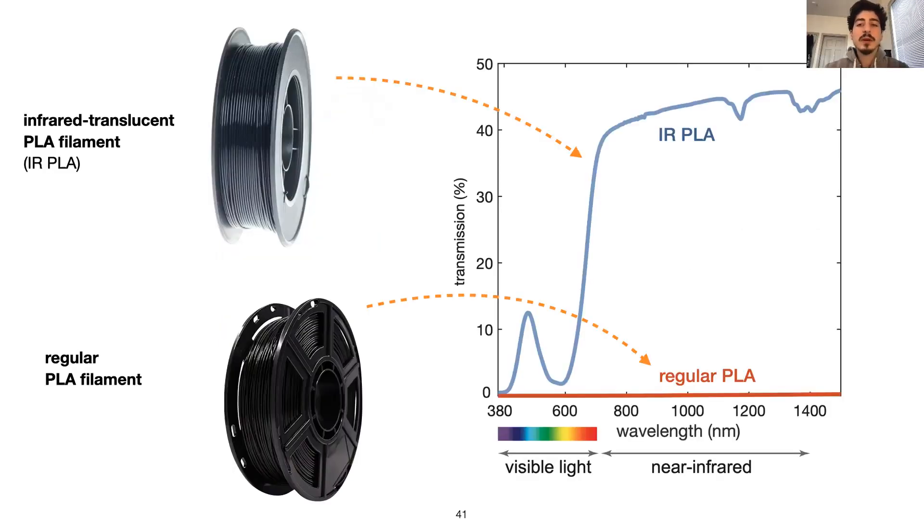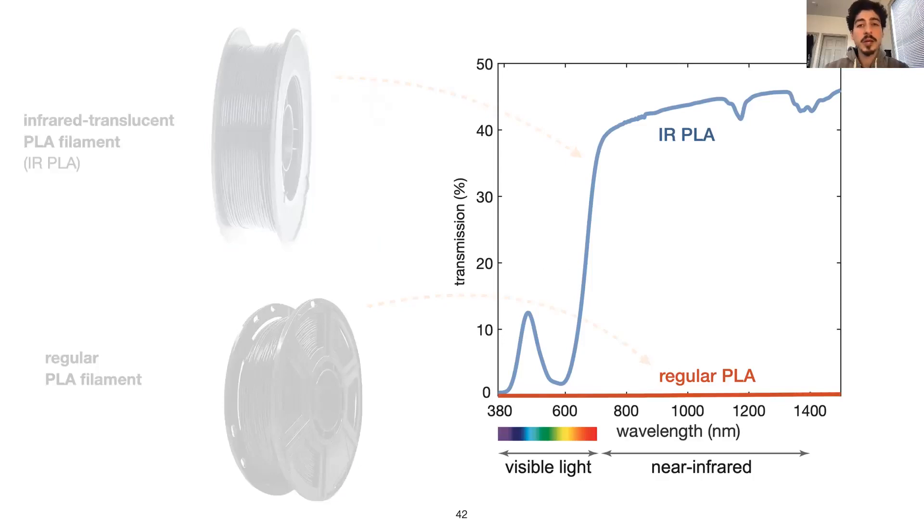We tested how this filament compares to regular PLA filaments and measured the transmission characteristics using a spectrophotometer. Here, the blue curve is for the IR PLA and the orange one is for the regular PLA, each for 1mm samples. Let's have a closer look. On the x-axis, we have the wavelengths including visible light and near-infrared. The y-axis is the transmission percent.